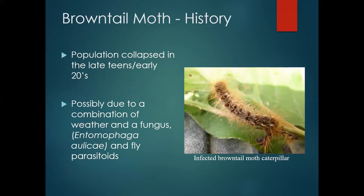The collapse that I mentioned happened in the late teens and early twenties. We don't know specifically why, but it was probably due to a combination of cool wet weather in the spring, which helped the fungus and virus that attack browntail gain hold and really crash the population. Those flies and wasps do help control browntail, but the fungus and the virus pack the most punch and have the most potency for controlling the population.